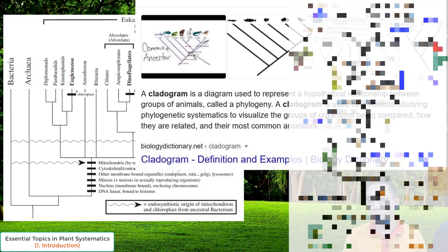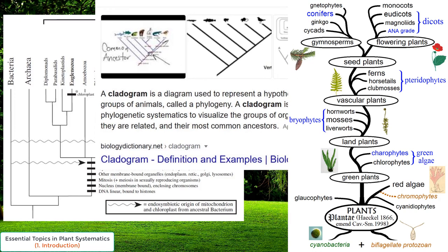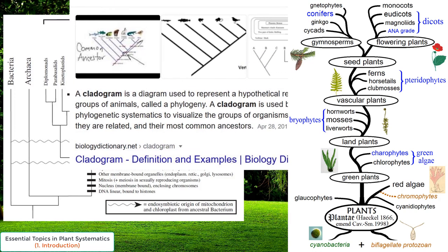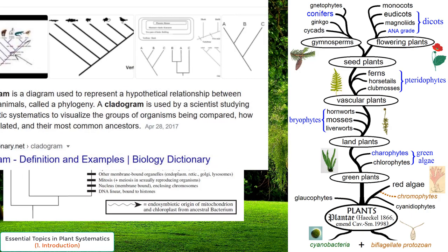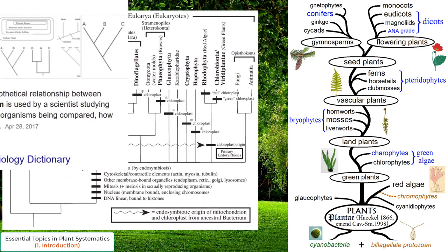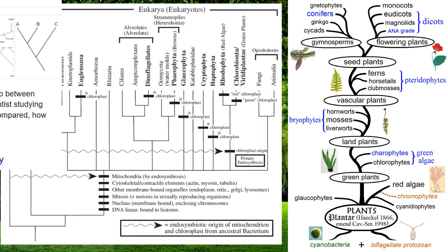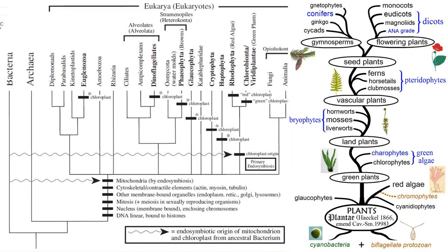So, the root here is the ancestor. Then, we have further branching towards different groups and eventually individual species. Now, the lines of the cladogram represent lineages, and further branching represents lineage divergence.